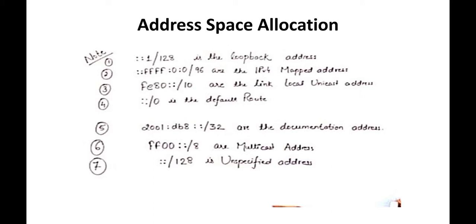Next is the link-local unicast address, which we have seen before. We use auto-generated IPv6 with this address. If you write the prefix FE80 — both FE80 are the same — with /10, that means 7 bits will never change. You have a prefix; the remaining bits will change. So the link-local unicast address uses FE80::/10.